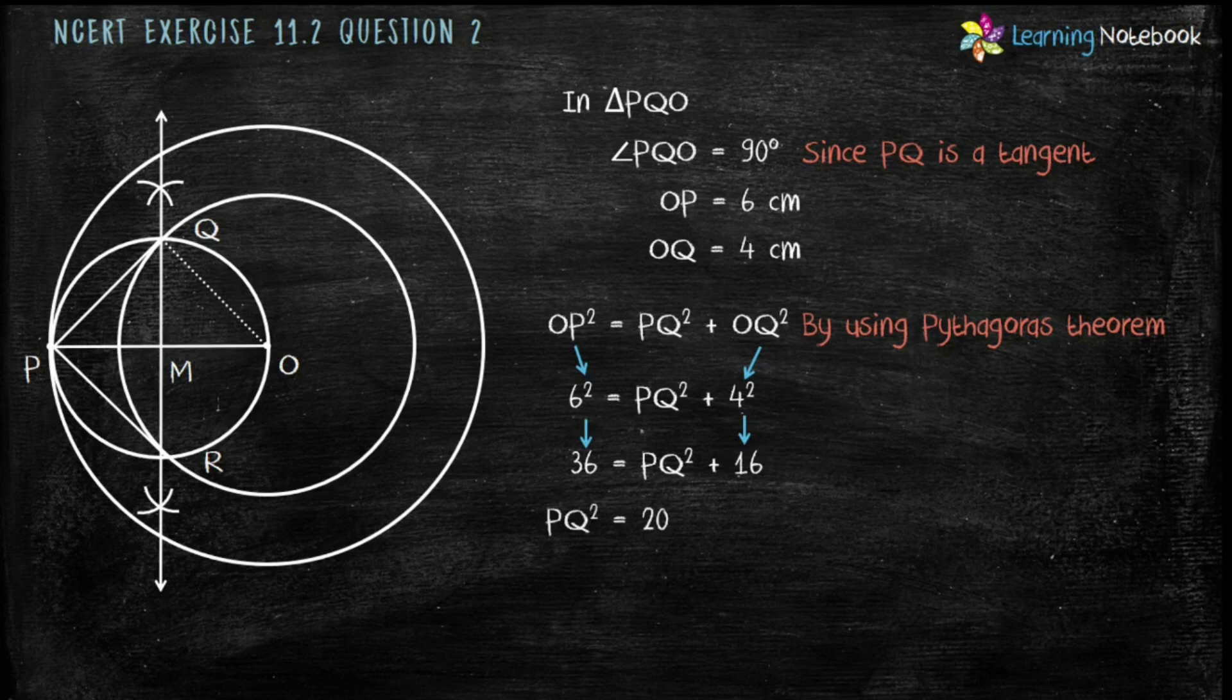So, PQ² equals to 20, which means PQ equals to 2√5, which equals to 4.47 cm. Therefore, length of tangent is 4.47 cm.